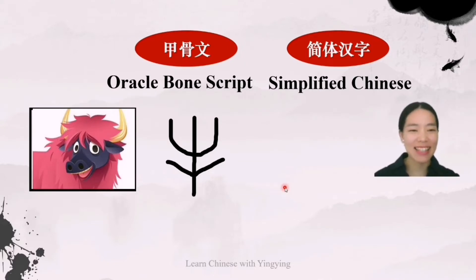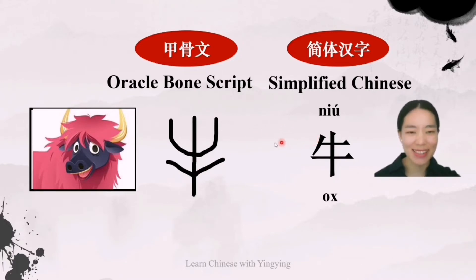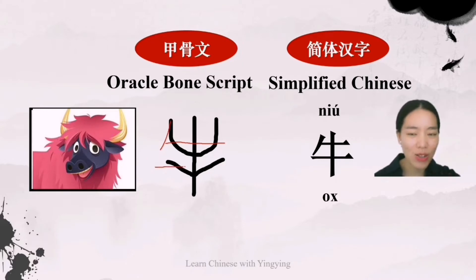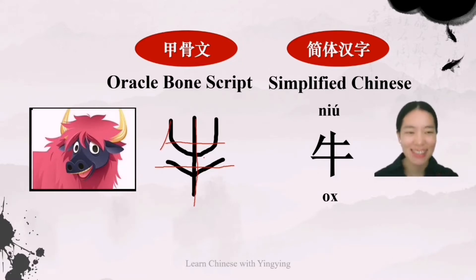And then this is the simplified Chinese. It is pronounced as 牛 (niú). It means ox. Let's see how it evolved into this one. See, this is the left horn, and then the rest part becomes a straight line. Here is the ear of the ox, also simplified into a straight line. And this one is the whole face — doesn't change. If we look closer, we can see the strong connection.